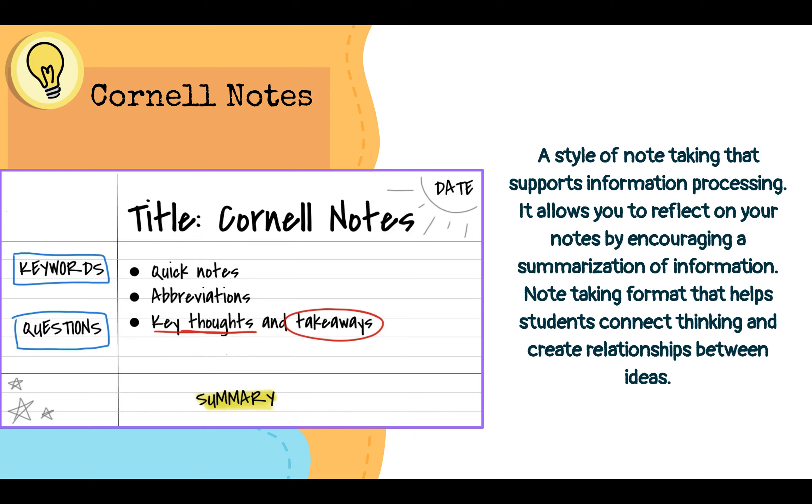One very effective way of taking notes is the Cornell notes format. This format is a style of note-taking that supports information processing because it allows you to reflect on your notes by encouraging a summarization of information. This format also helps students connect thinking and create relationships between ideas.